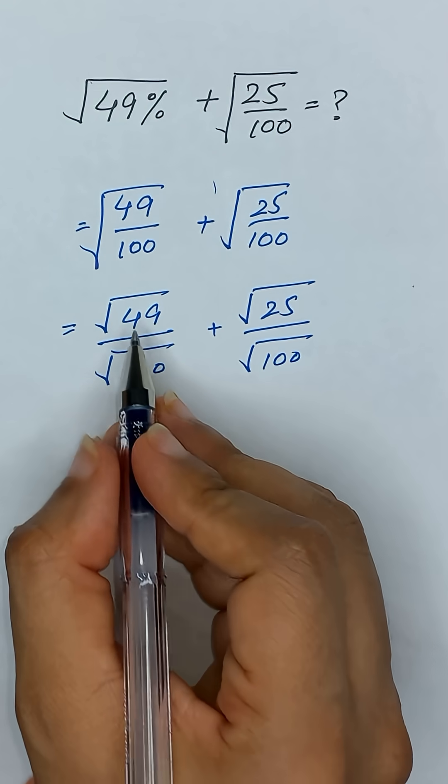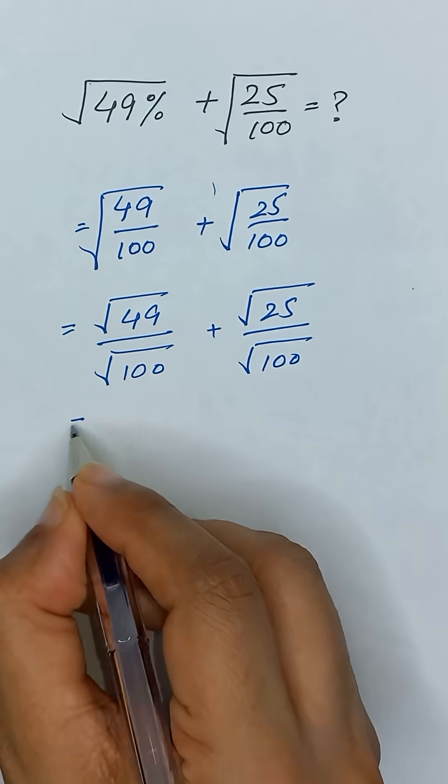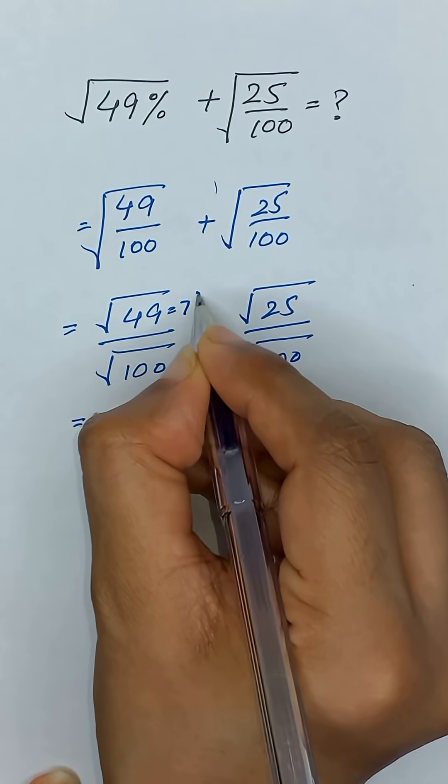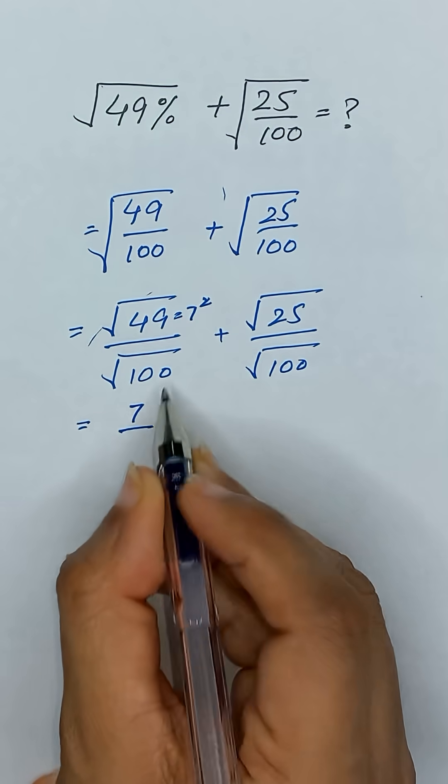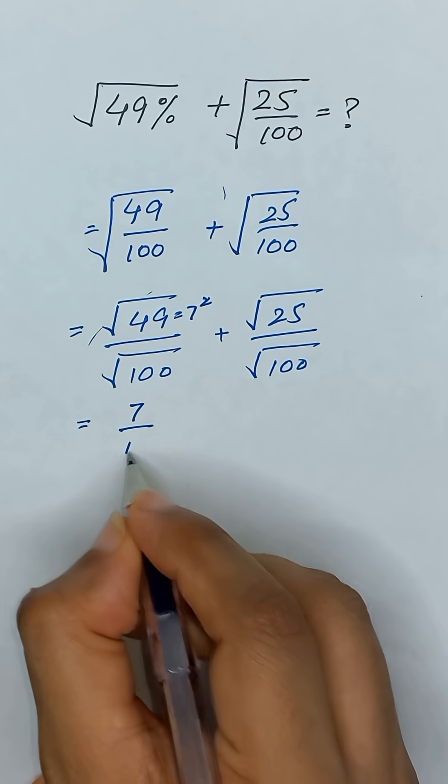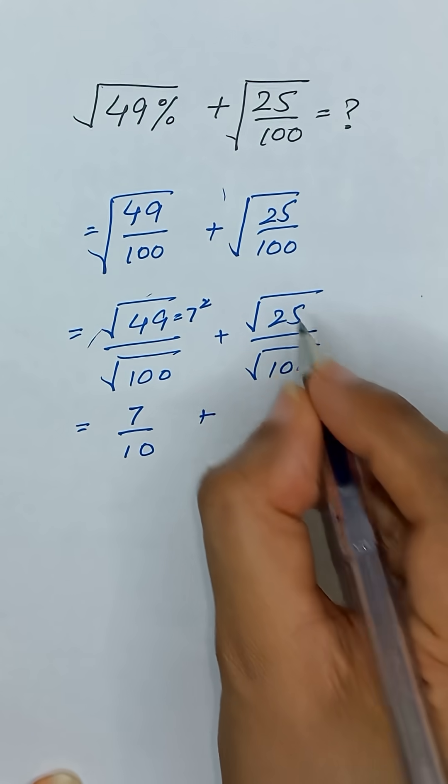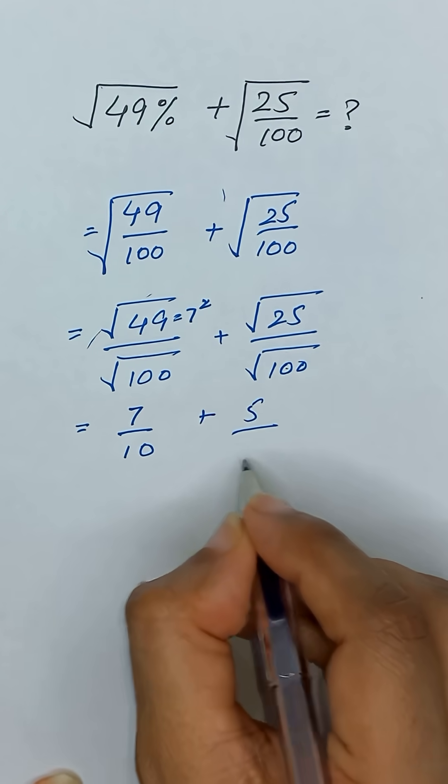As we know that 49 is a perfect square of 7, so it will be equal to 7 squared. So this square and square root will be cancelled out, it will become 7. Similarly, square root of 100 will be 10, square root of 25 is 5 and square root of 100 is 10.